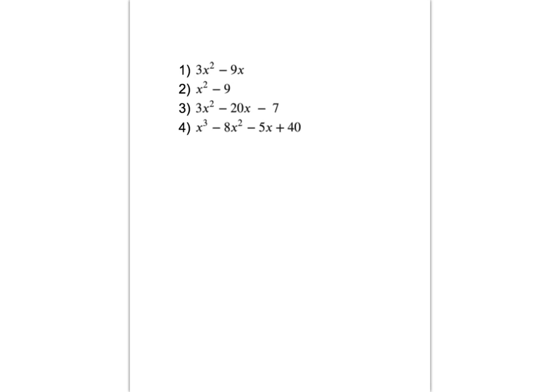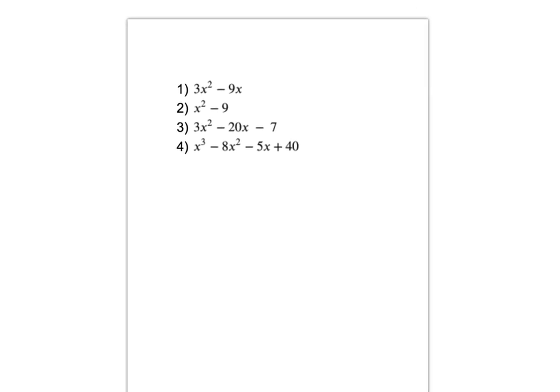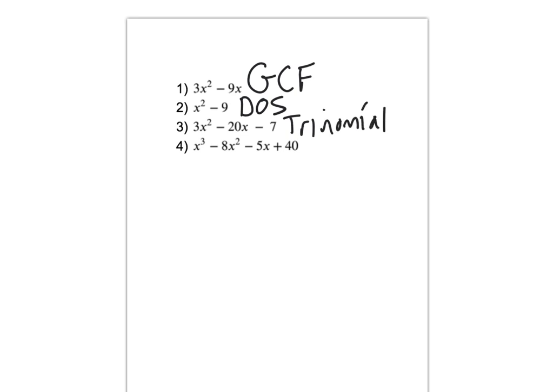All right, first we're going to just sort what these are. So the first one is GCF. The second one would be difference of squares. The third one we have trinomial. And the fourth one we have grouping.